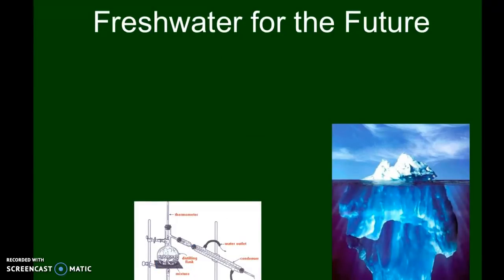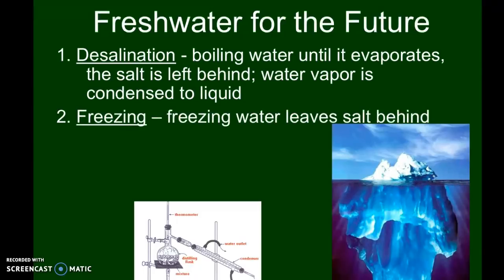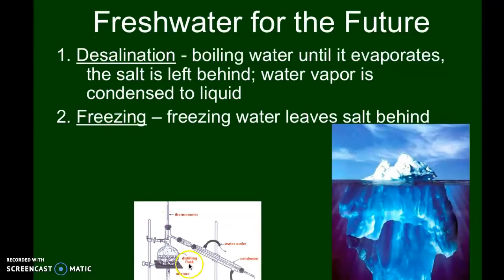Since we don't have a lot of fresh water on Earth available for drinking, scientists have been experimenting with several different methods. One of them is desalination — the stem 'de' means remove and 'saline' refers to salt, so it's literally the act of removing salt from water. This desalination apparatus works by boiling water until it evaporates, leaving the salt behind. The water vapor is then condensed and cooled back into a liquid, collected, and used. However, this is a really expensive process when scaled up to provide fresh water for a large population.